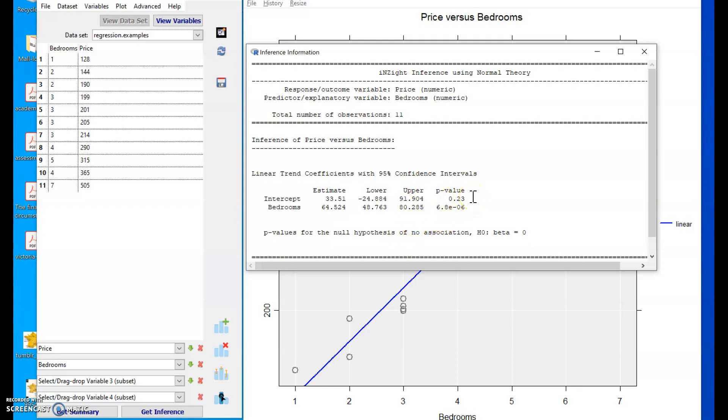And also calculates a p-value for the two-sided hypothesis test that the true underlying coefficients are equal to zero. So here we have a p-value for the slope. Not often interested in the p-value for the intercept.